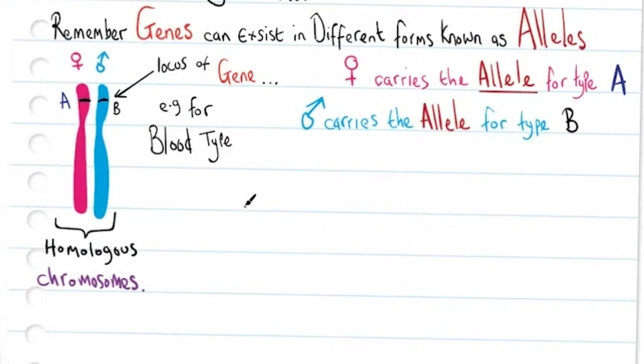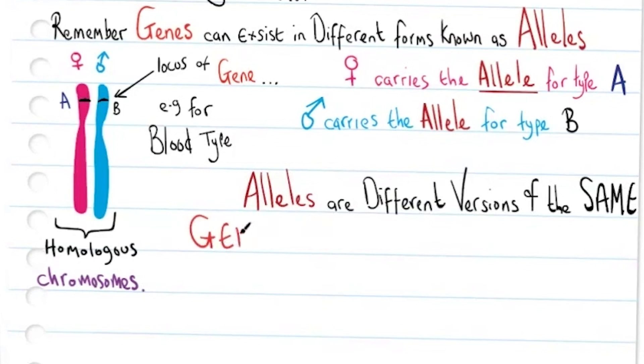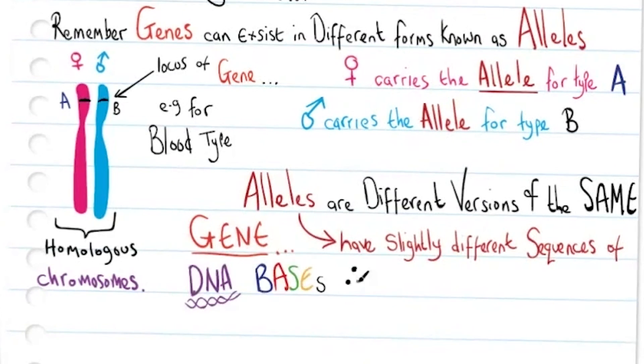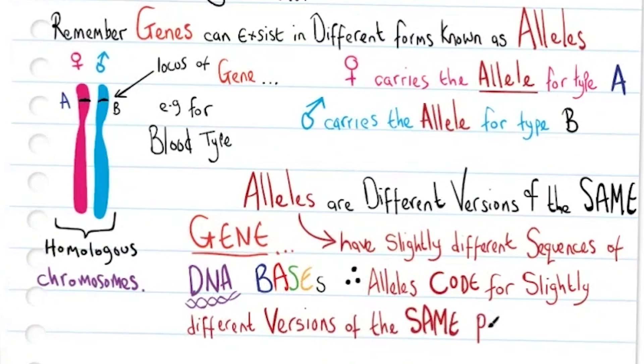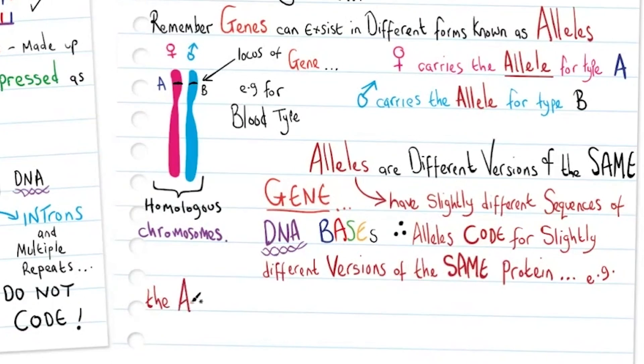These are genes for blood type, but alleles are different versions of the same gene. Alleles have slightly different sequences of DNA bases and therefore code for slightly different versions of the same protein, for example the antigens present on red blood cells from the ABO system.